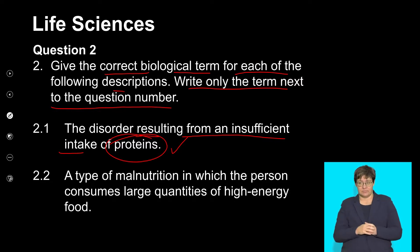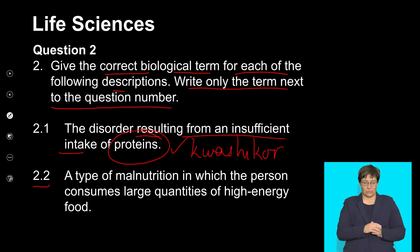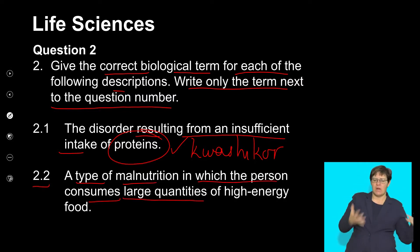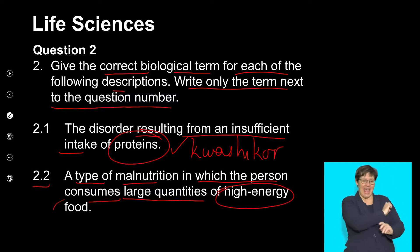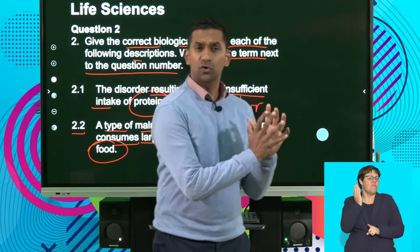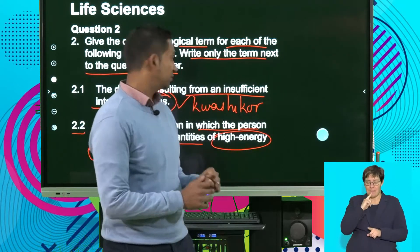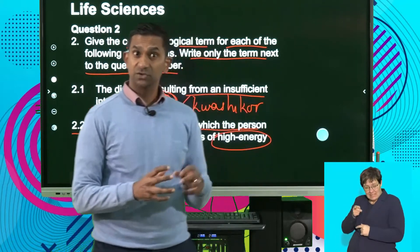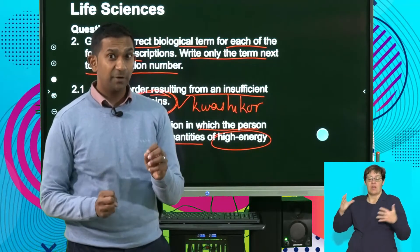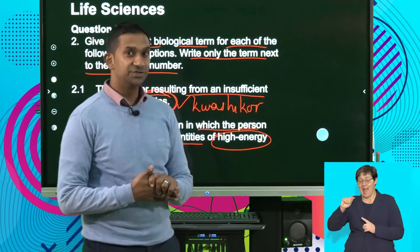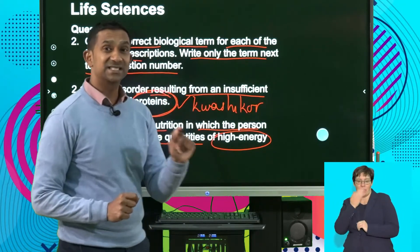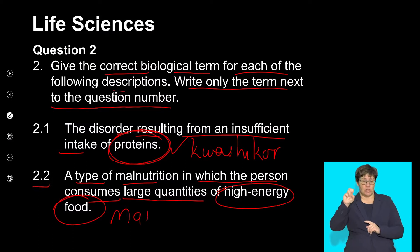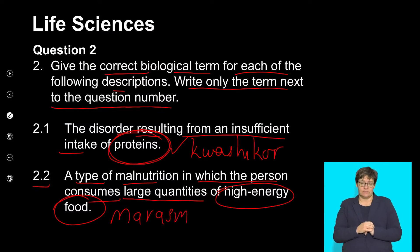2.2: A type of malnutrition in which the person consumes large quantities of high-energy food. The condition in which individuals consume large amounts of carbohydrates and lack other essential nutrients is called marasmus. Well done if you were able to get that.